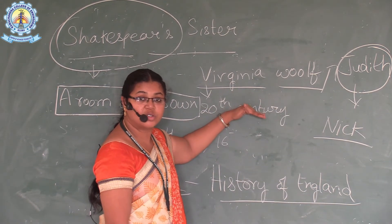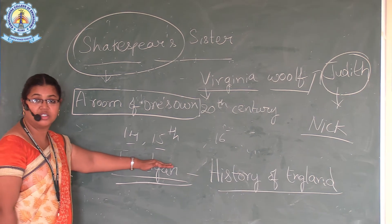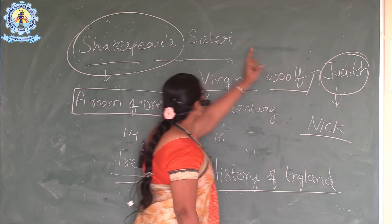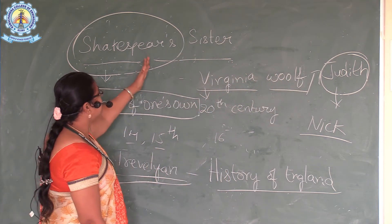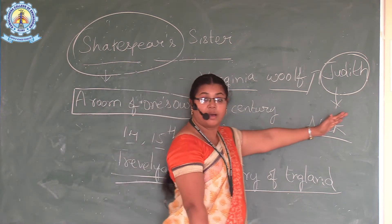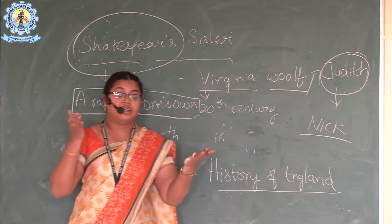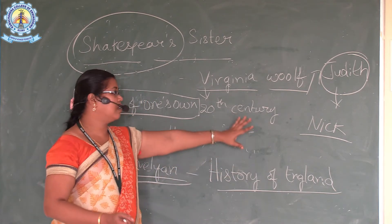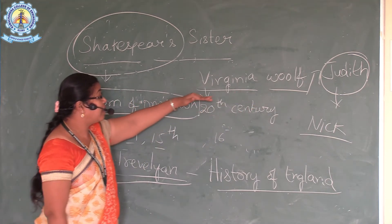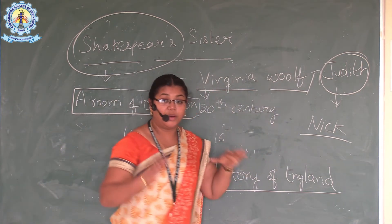Unable to go back to her house and unable to showcase her talent like Shakespeare, Judith committed suicide at the crossroads of London. That was the imaginary story created by Virginia Woolf. She wrote it because the same picture was projected in 14th and 15th century England — even a sister of Shakespeare was given no opportunity to showcase her talent, resulting in a sad ending.